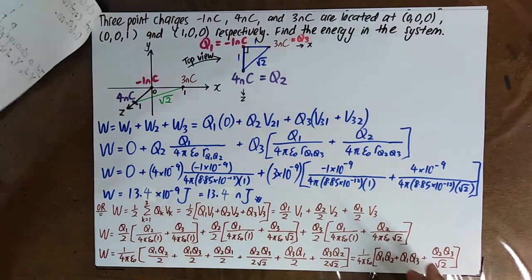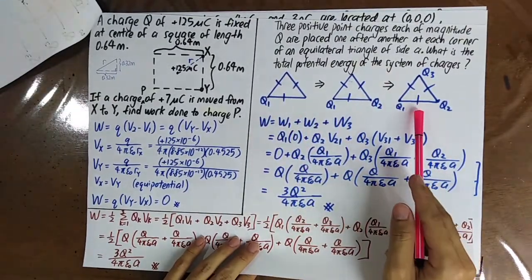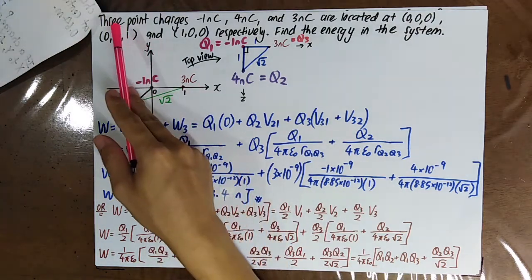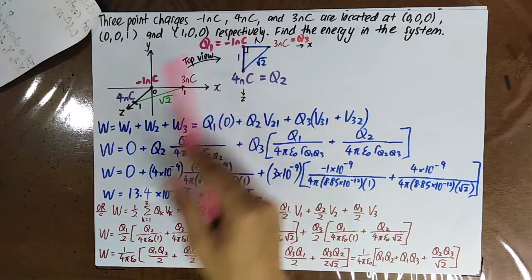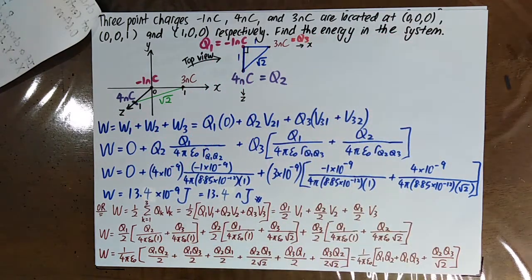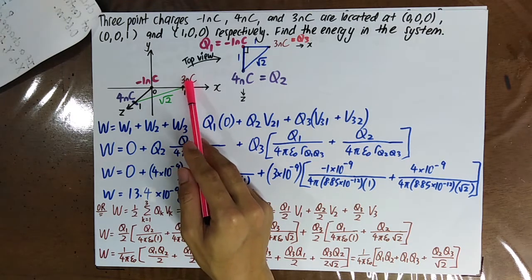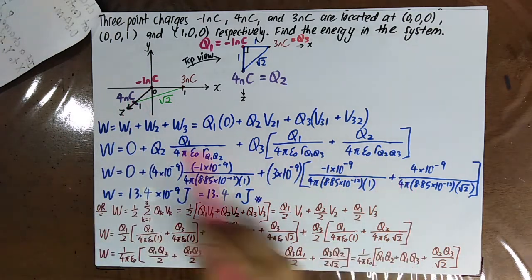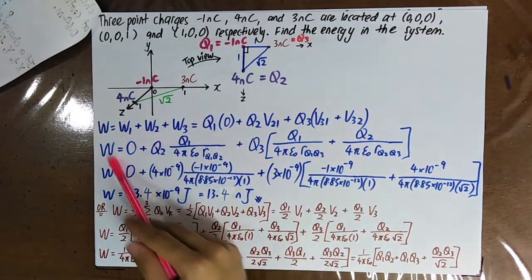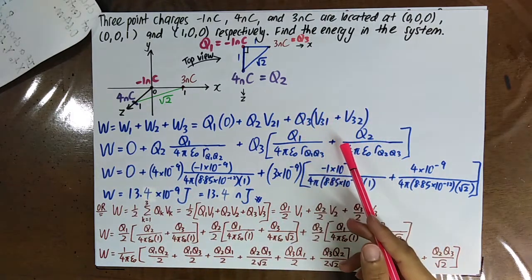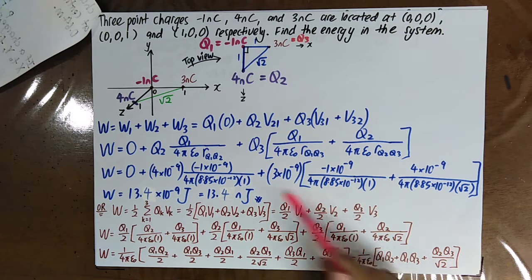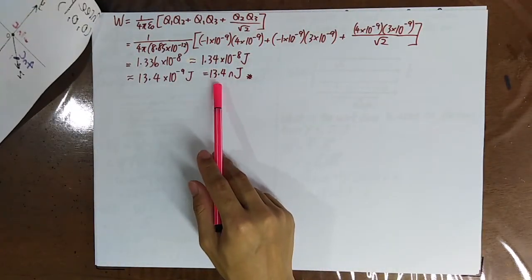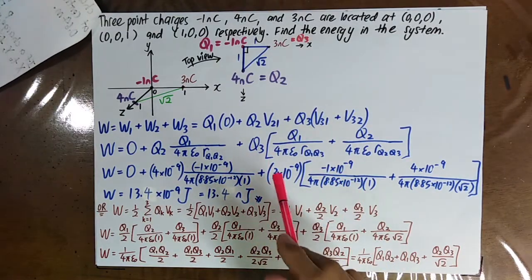Now upgrading from a 2D to a 3D diagram: three point charges are located at three different points — 3 nanocoulombs, negative 1 nanocoulomb at the origin, and 4 nanocoulombs. Find the total energy in the system. You can use either formula — the direct summation or W = ½ Σ qV — and both will give the same answer.